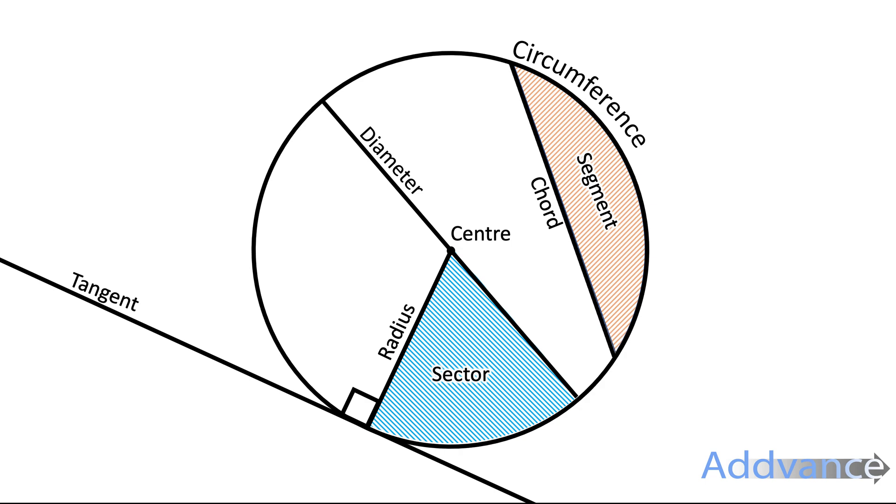And then we have a chord and a segment. A chord is a line from the circumference to the circumference. It's just any line from the circumference to the circumference.